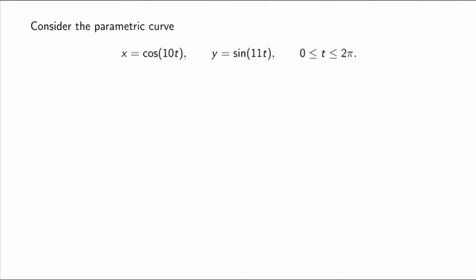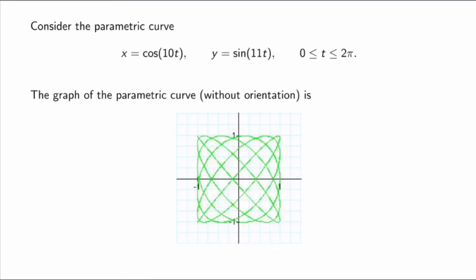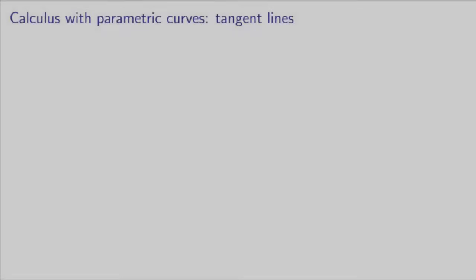Parametric curves can be quite complicated even if the original functions are simple. For example, taking x equal to cos(10t) and y equal to sin(11t) for t from 0 to 2π gives a very non-trivial and nice-looking graph, even though these are simple trig functions. It's also important to realize that, just as with implicit functions, parametric curves generally won't be the graph of a single function y as a function of x — they define many functions implicitly.